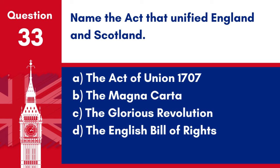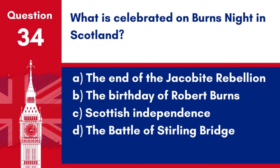Question 33. Name the Act that unified England and Scotland. a. The Act of Union 1707. b. The Magna Carta. c. The Glorious Revolution. d. The English Bill of Rights. Answer: a. The Act of Union 1707. The Act of Union 1707 unified the parliaments of England and Scotland, creating the Kingdom of Great Britain.